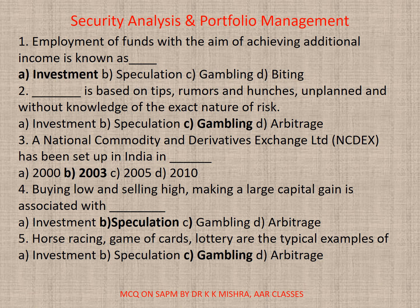Question number 1: Employment of funds with the aim of achieving additional income is known as — correct option A: Investments. Note that I will just be reading out only the correct options. This should act as a ready reference point. Question 2: Dash is based on tips, rumors, and hunches — unplanned and without knowledge of the exact nature of risk. Correct option C: Gambling.